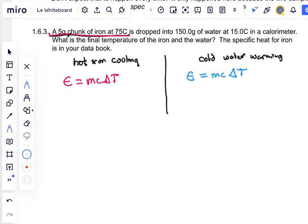The mass of the iron is 5 grams. The specific heat for iron is in the data book on page 3. It's 0.449 joules per gram degree Celsius. I thought I knew that but I didn't trust myself and checked it. And the temperature change, again we have this problem where the iron starts out at 75 degrees and it's going to cool down to some in-between temperature.